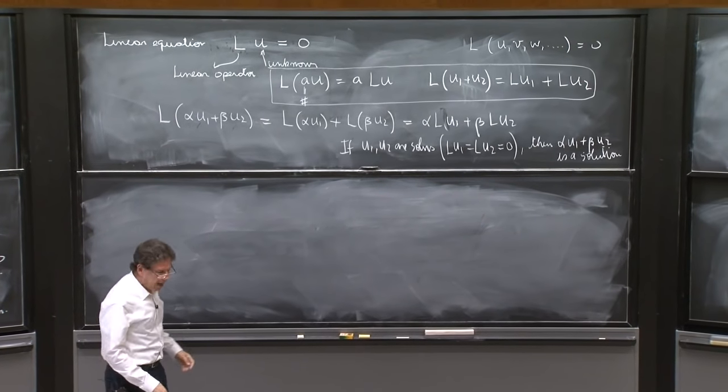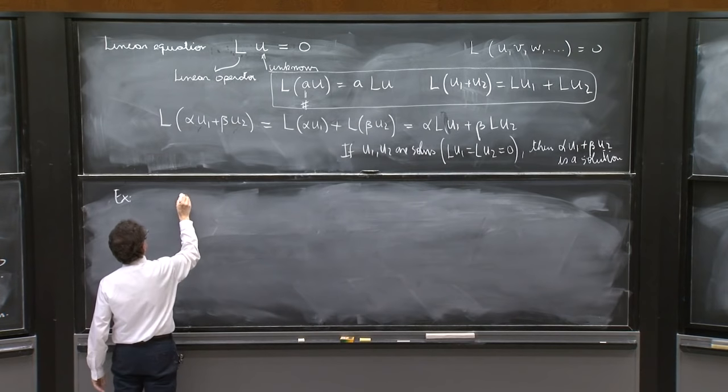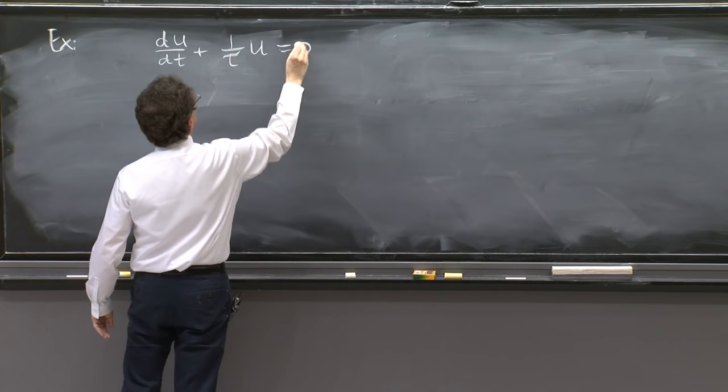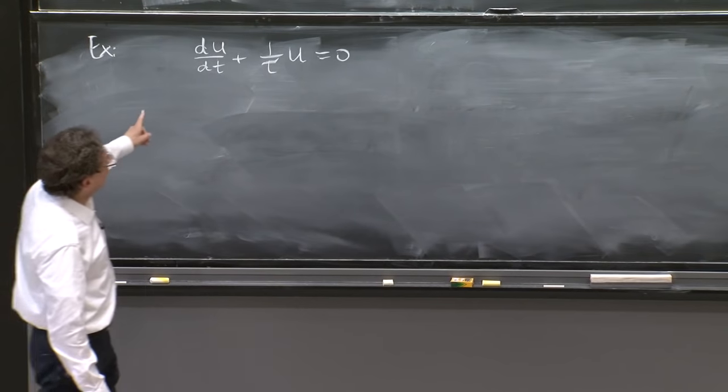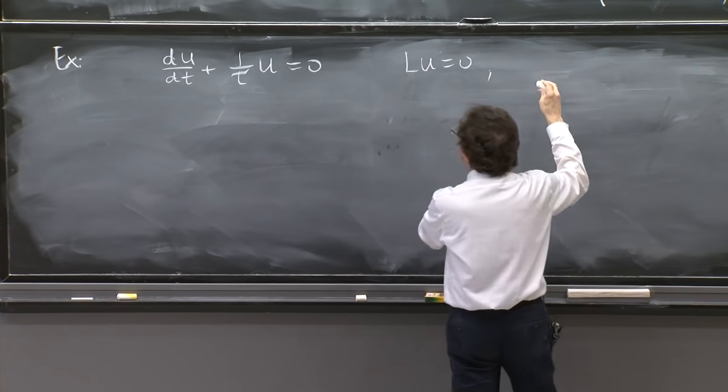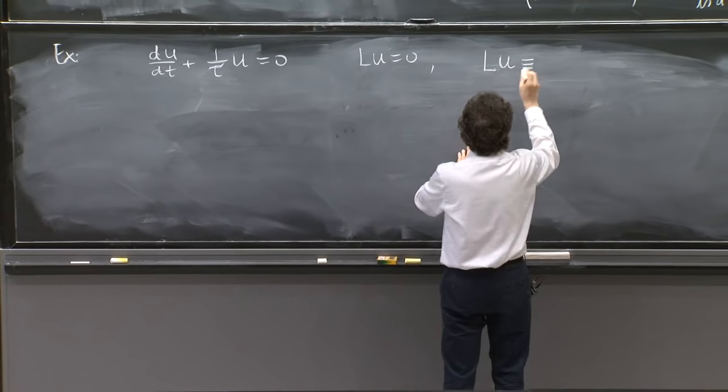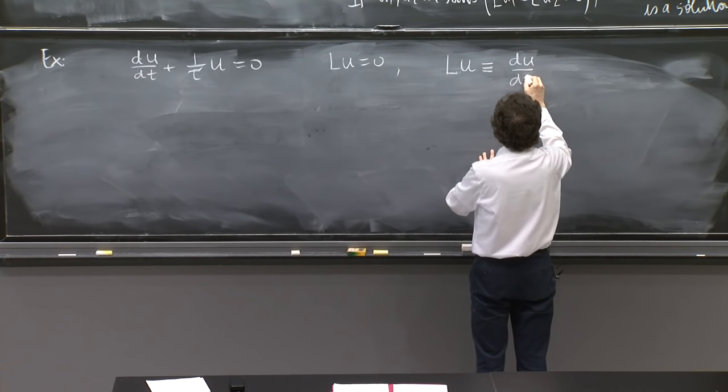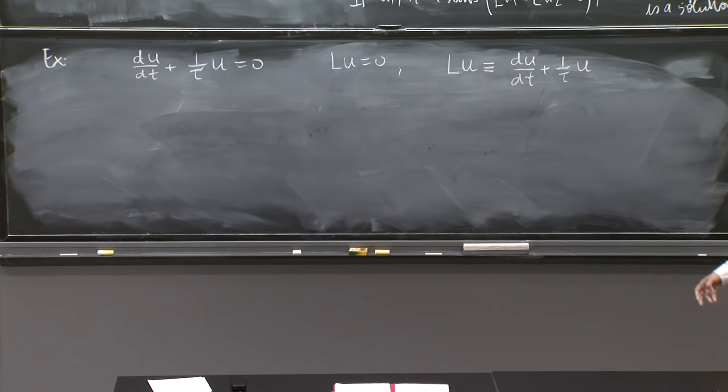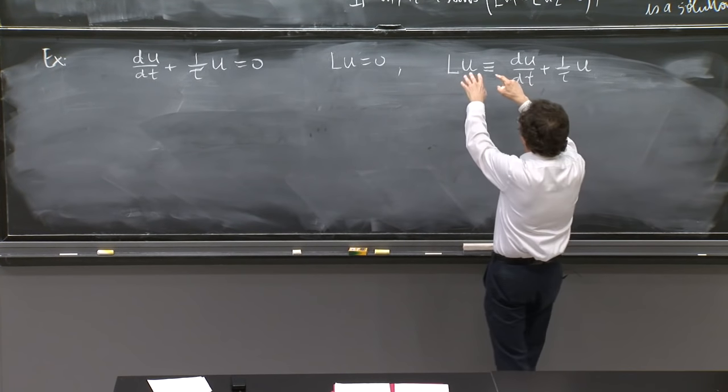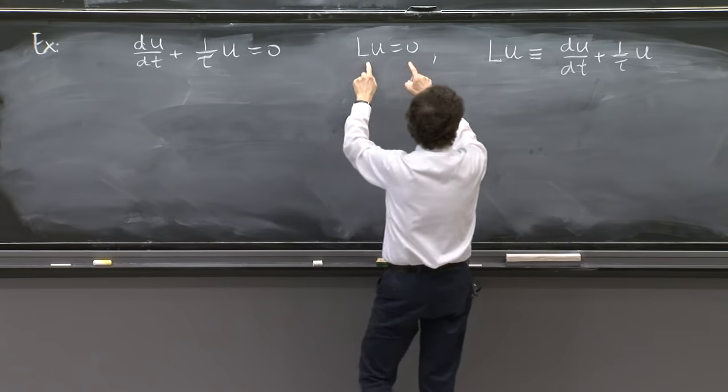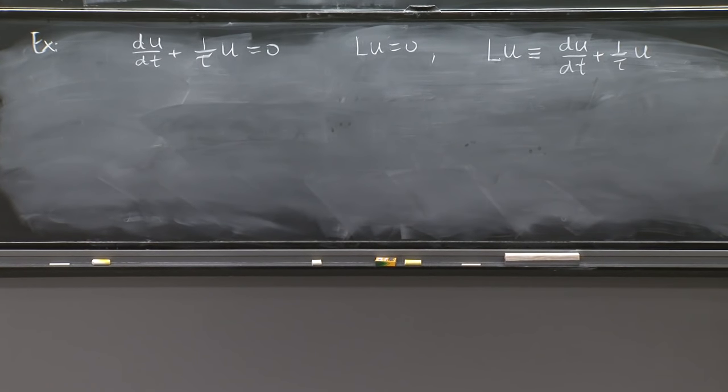So this is how we write a linear equation. Now an example probably would help. If I have the differential equation du/dt + (1/τ)u = 0, I can write it as an equation of the form Lu = 0 by taking L on u to be defined as du/dt + (1/τ)u. Now I haven't done much here. I've just said, look, let's define L acting on u to be this, and then certainly this equation is just Lu = 0.